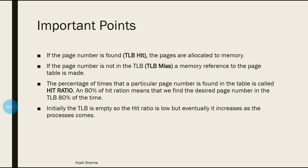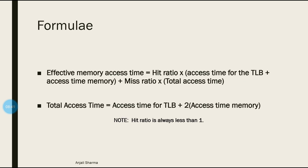If a page is found in the TLB, that is a TLB hit; if not found, it is a TLB miss and a reference to the page table is made. The percentage of time a particular page number is found in the TLB is known as the hit ratio. For example, an 80% hit ratio means we find the desired page number in the TLB 80% of the time. Initially the page table is empty so the hit ratio is low, but it increases as recently accessed page entries accumulate.